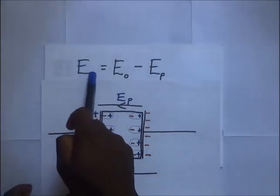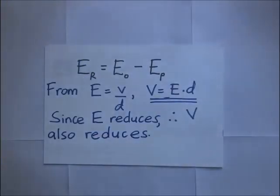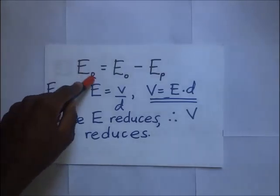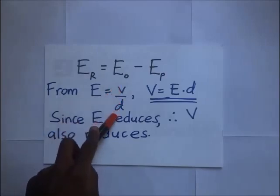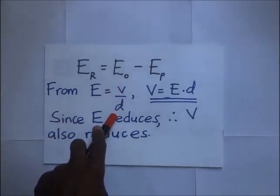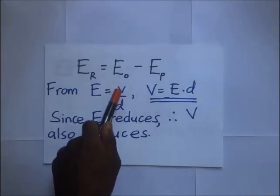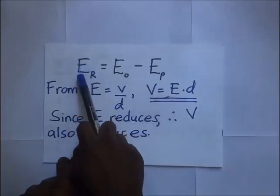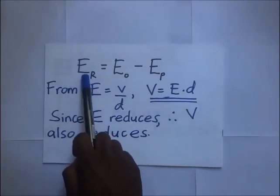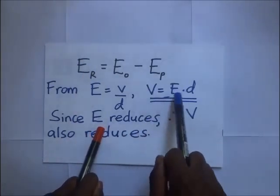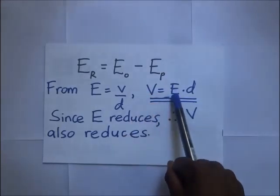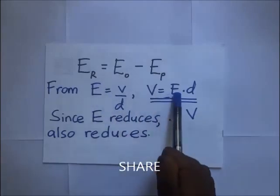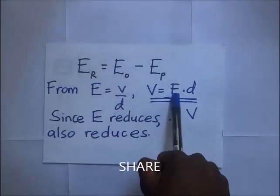Since the effective field E_r is much less, and from the parallel plate capacitor equation E = V/d, making V the subject gives V = E × d. Because the effective intensity is reduced, the voltage between the plates will also reduce accordingly.